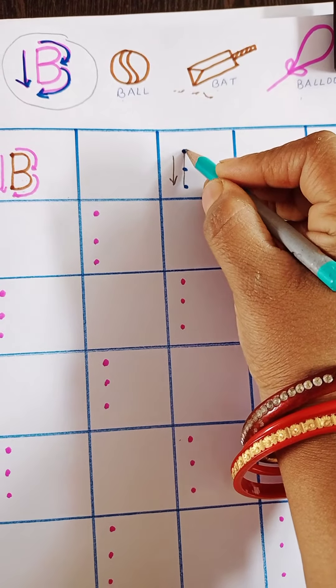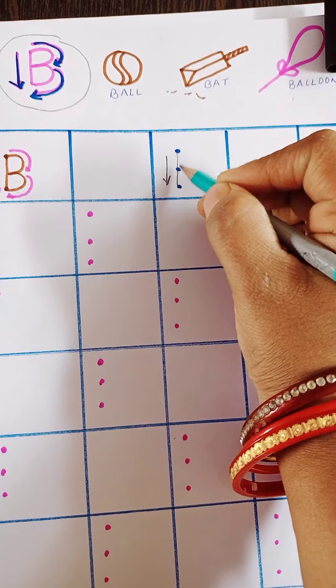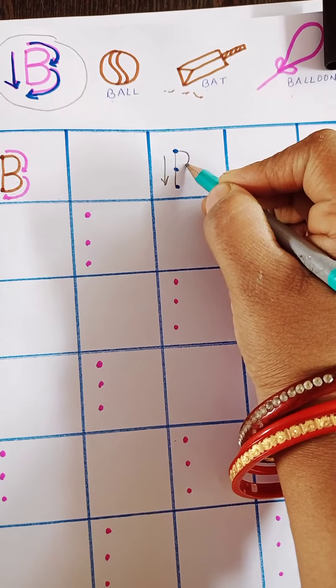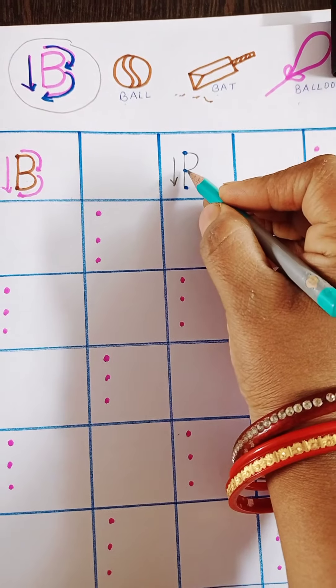Now, from first dot, pehle waale dot se middle waale dot peh humi kar banayenge in this way.